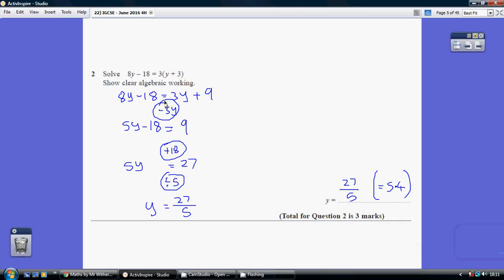Now let's move all our y's onto the left hand side, because that's got the greatest number of y's to start with. So how do we undo a plus 3y? We minus 3y from both sides, giving us 5y minus 18 equals 9.